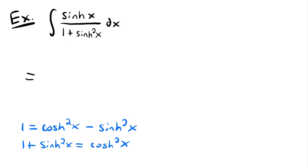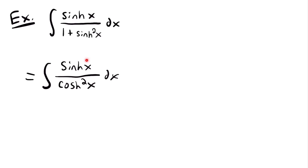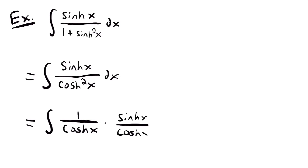Rewriting the integral, we now have the integral of hyperbolic sine of x divided by hyperbolic cosine squared x, times dx. We could use u-substitution here by setting u equal to hyperbolic cosine, but there's actually an easier method. We can split the fraction into two: 1 divided by hyperbolic cosine of x, times hyperbolic sine of x divided by hyperbolic cosine of x. Multiplied together, these still give the same function.